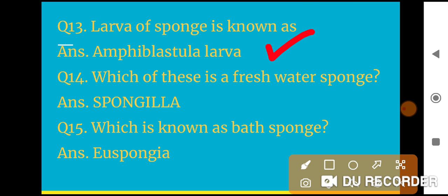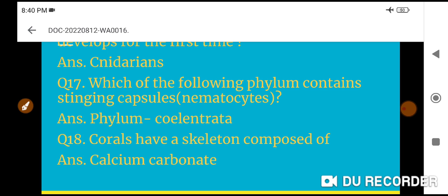Question 13: Larva of sponge is known as amphiblastula larva. Question 14: Which of these is a fresh water sponge? Spongilla is a fresh water sponge. Question 15: Which is known as bath sponge? Euspongia is known as bath sponge.